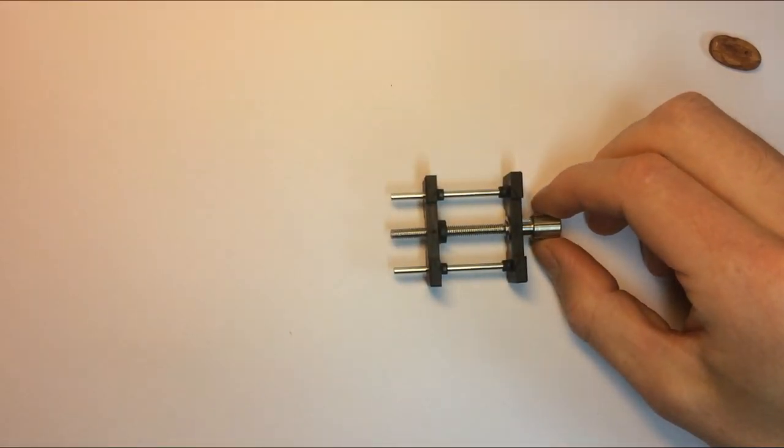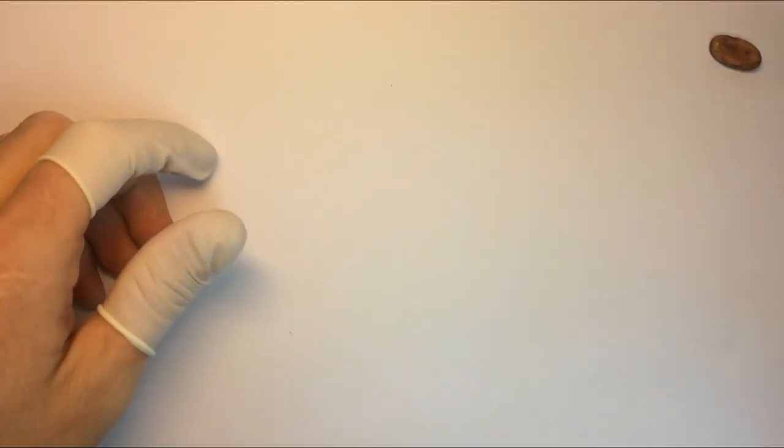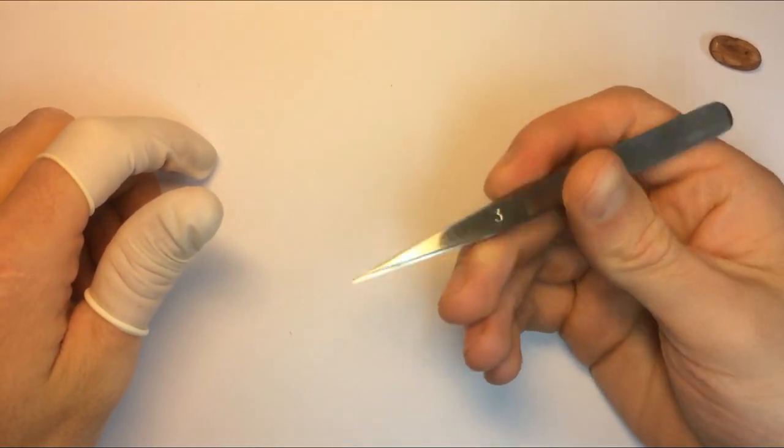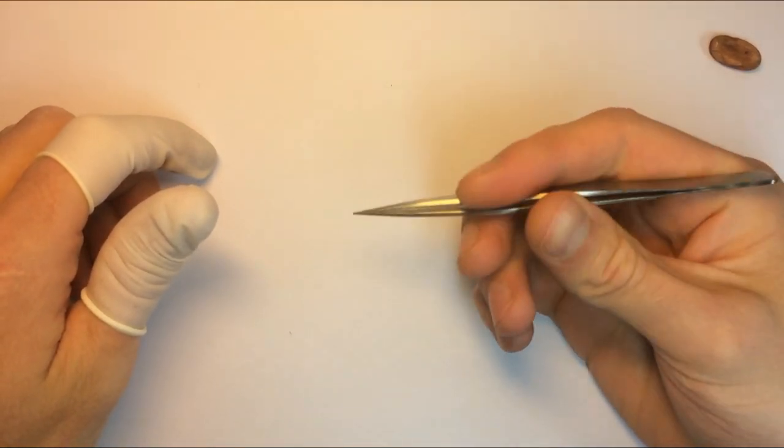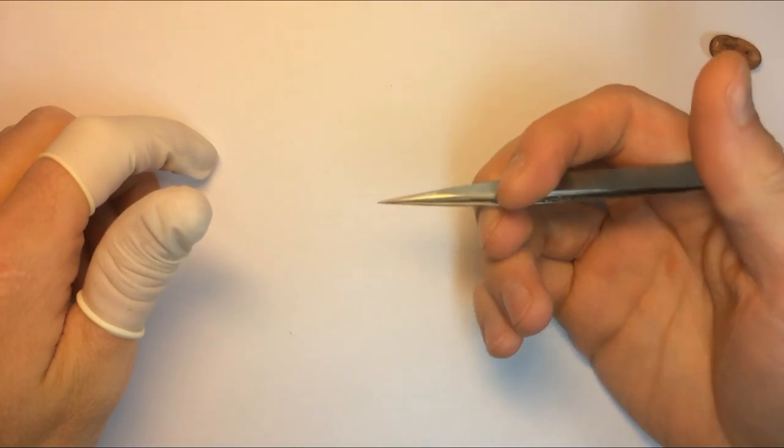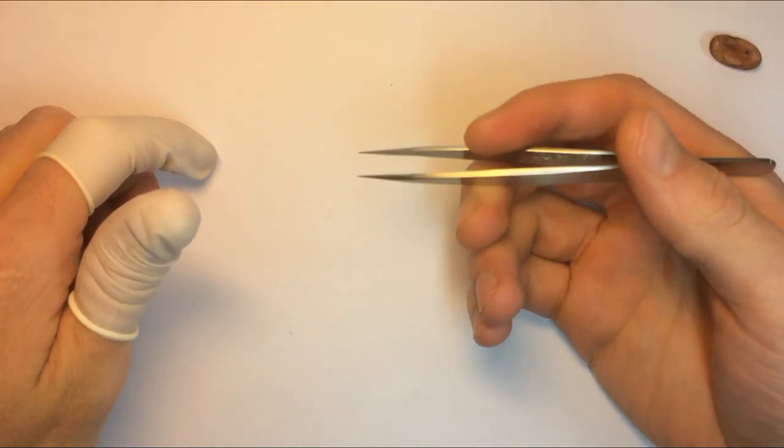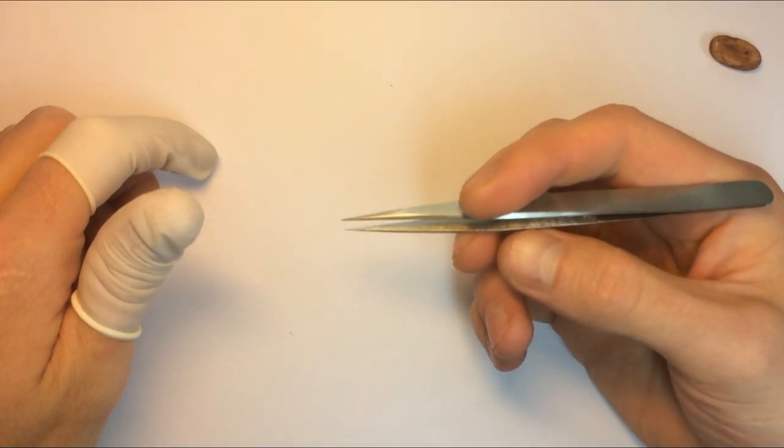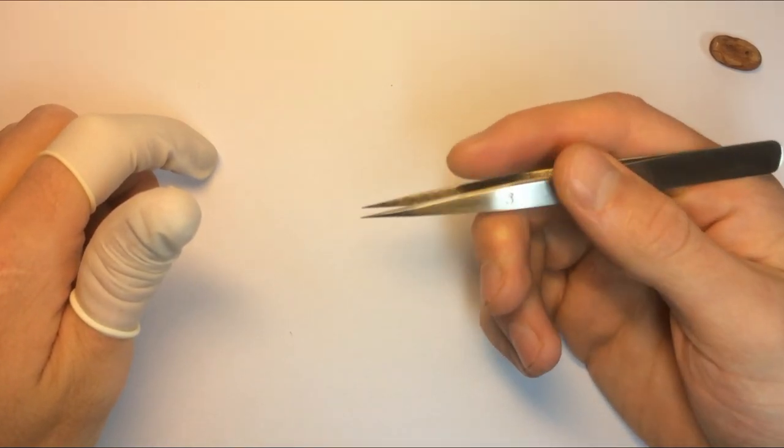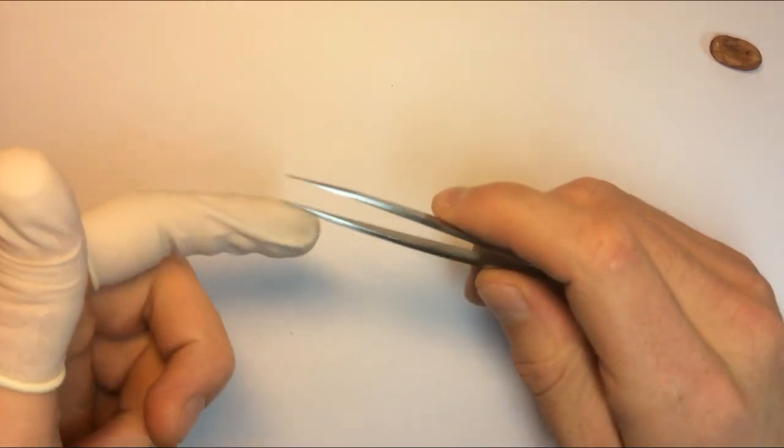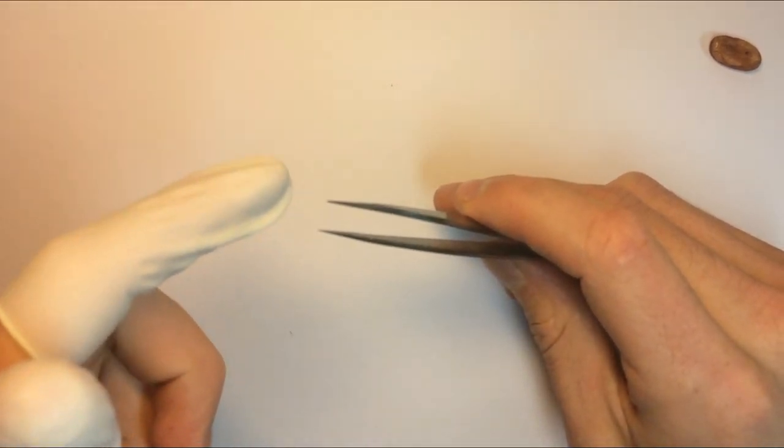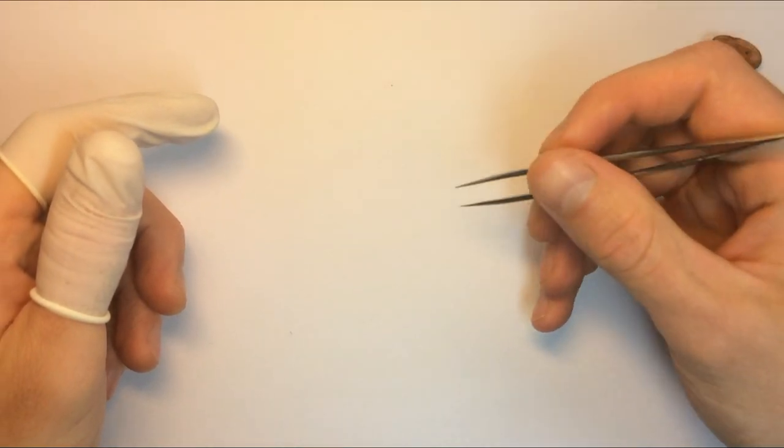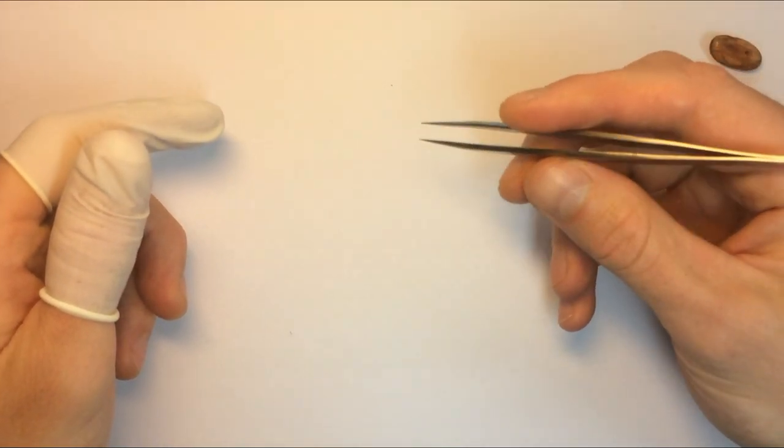Next up we have the bread and butter of every watchmaker, and that is the tweezers. This is a three dollar pair of tweezers from esslinger.com, but if I was to order again I'm definitely going to order the thirty dollar Dumont ones. Why? Because one side is thinner than the other, and when you're picking up minuscule items or screws or whatever, it really makes a difference.